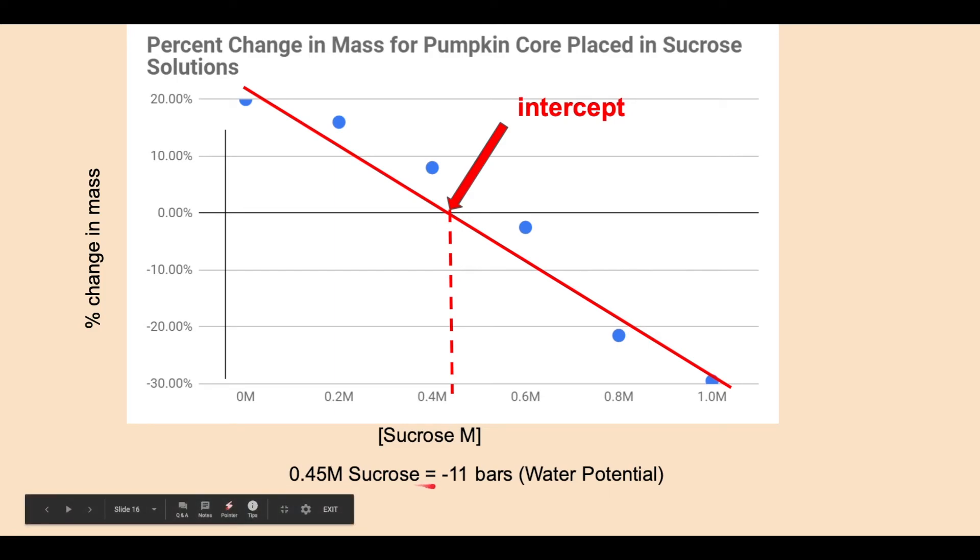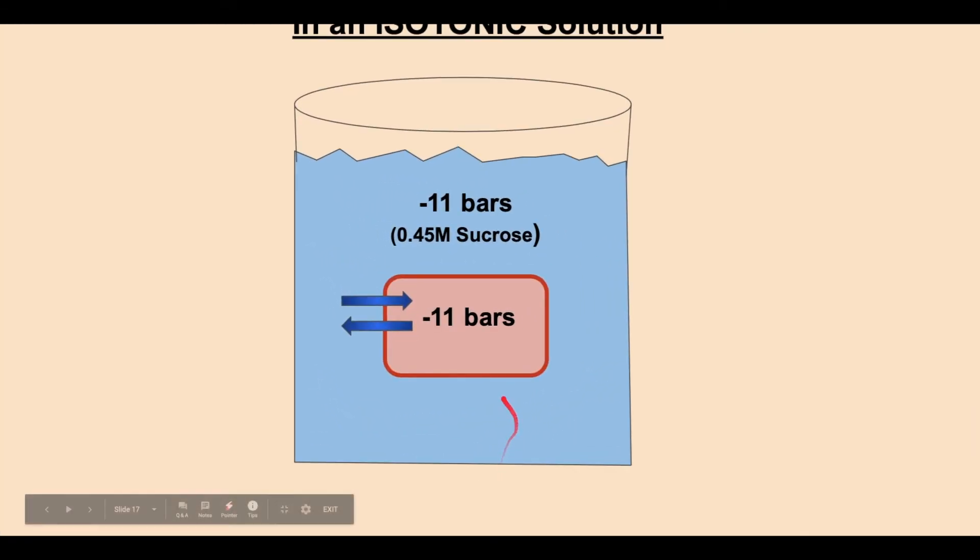So 0.45 molar sucrose is minus 11 bars of the water potential. So if it's minus 11 bars, the water potential that it's in, that must mean that the equal water potential is on the inside. So therefore, all of that dissolved material inside the pumpkin cell has to also be equal to 11 bars.